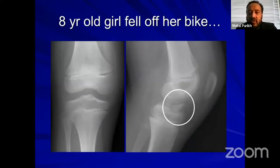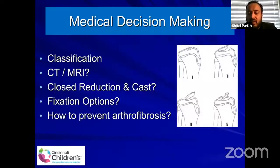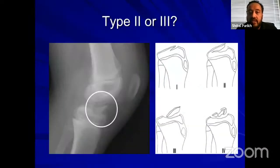Now moving to ACL avulsion, which is a tibial spine fracture — because in children we'll often see a tibial spine avulsion rather than a mid-substance ACL tear. Here is an eight-year-old girl who fell off her bike. We need to decide how to classify this injury, whether CT or MRI is needed, whether to recommend closed reduction and casting, what the fixation options are, and how to prevent the most common complication, which is arthrofibrosis. This is a type 2 fracture where it's hinged on the backside. Type 3 is a complete avulsion and type 4 has comminution.